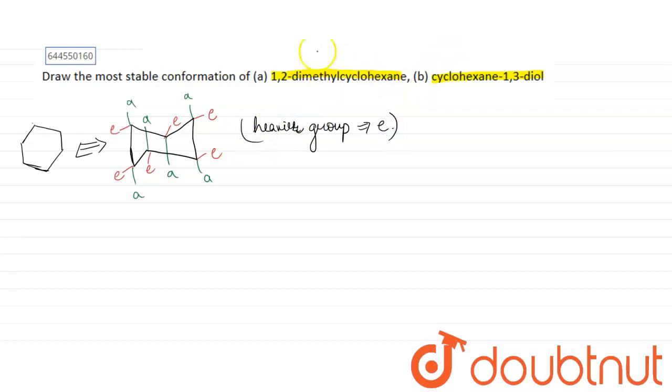to tell the more stable conformer of 1,2-dimethylcyclohexane. So what is the possibility? We can draw it like this is our cyclohexane.